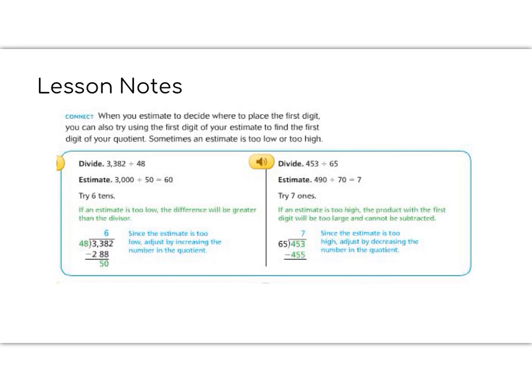So when we estimate, sometimes we get the number that's the first digit of our quotient right away with our estimate, but sometimes it's a little too high or a little too low, and we have to adjust. That's what this lesson is going to help us do.